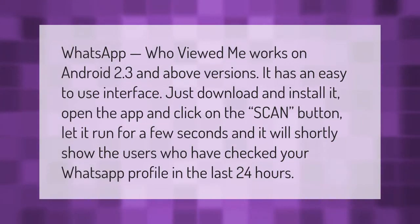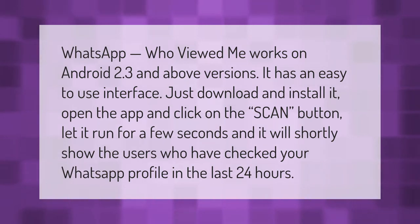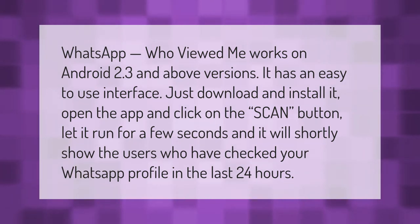WhatsApp 'Who Viewed Me' works on Android 2.3 and above versions. It has an easy-to-use interface — just download and install it, open the app, and click on the scan button. Let it run for a few seconds and it will shortly show the users who have checked your WhatsApp profile in the last 24 hours.